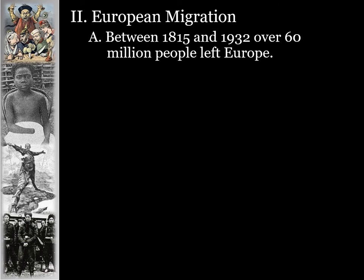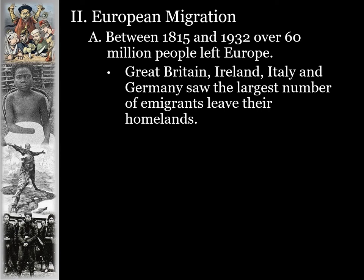European migration is also a part of this new wave of imperialism. Between 1815 and 1932, over 60 million people left Europe. Great Britain, Ireland, Italy, and Germany saw the largest number of emigrants.